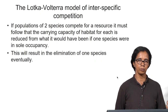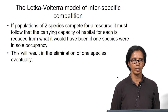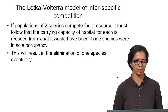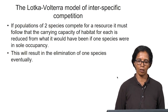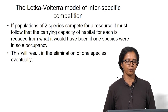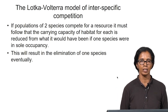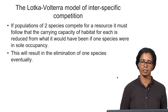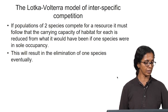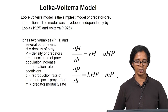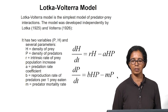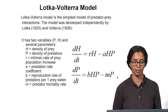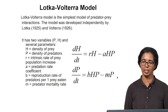When multiple species exist in an ecosystem, the Lotka-Volterra model defines the competition between species. If populations of two species compete for a resource, the carrying capacity of the habitat for each is reduced from what it would have been if one species were in sole occupancy. If only one species were there it would use all the resources, but with two species there is competition and carrying capacity gets reduced. This will result in the elimination of one species eventually if competition is tough. The Lotka-Volterra model is the simplest model and can also be used for prey-predator relationships. It was developed independently by Lotka and Volterra in 1925–26.